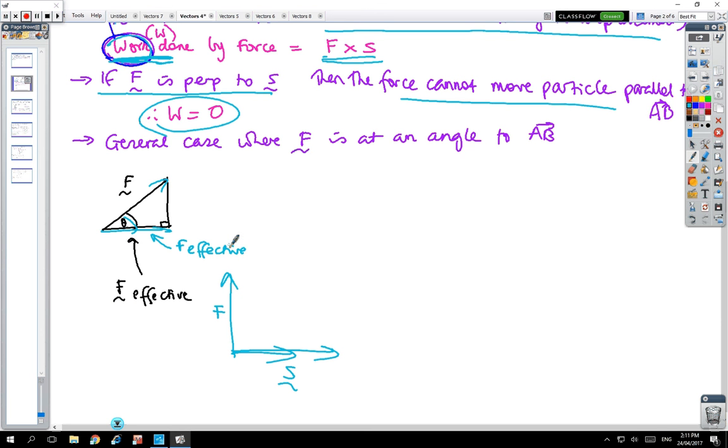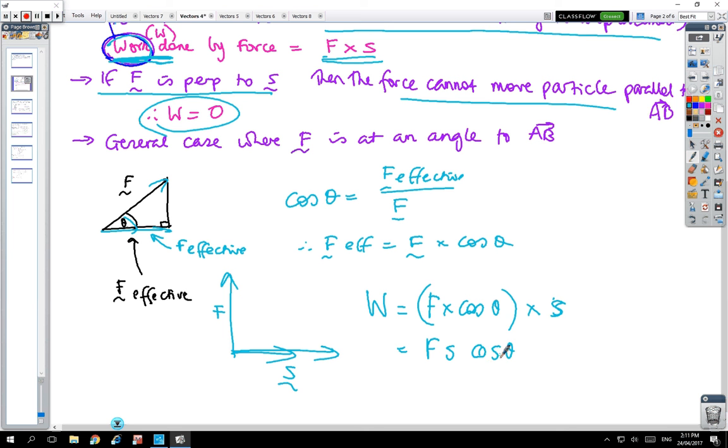We've got cos θ equals the adjacent effective over F the hypotenuse. So the effective force will be the force multiplied by cos θ. Going back to that work definition again, we've got force times, that's the effective force, times the displacement. So we've got this formula here when you've got an angle.